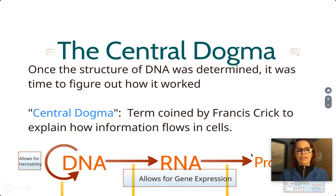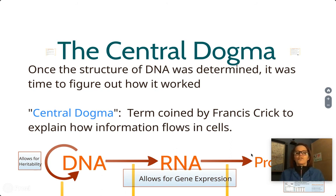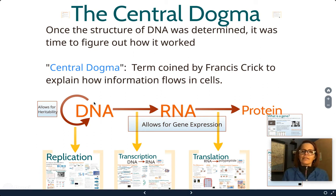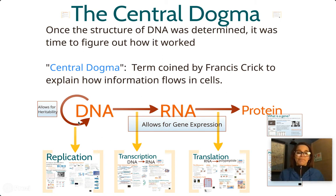So the central dogma — what are we talking about? Once the structure of DNA was determined, Watson and Crick are the scientists that got credit and won the Nobel Prize. They were using several other scientists' research, including Rosalind Franklin and Maurice Wilkins, but they are the ones given the Nobel Prize for determining the structure of the DNA molecule. The central dogma is a phrase coined by Francis Crick, and it refers to how information flows in cells — it starts in the DNA, that information is transferred to a molecule of RNA, which then gets deciphered into a protein. The protein is the ultimate outcome of what the DNA was trying to accomplish.